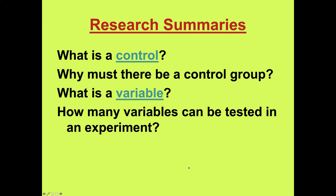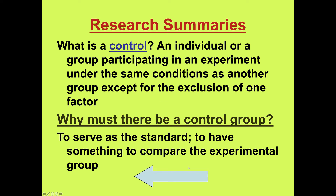The variable is what you are manipulating, and it is recommended that you only have one variable per experiment. The control is an individual or group participating in the experiment under the same conditions as the other group, except that the variable being manipulated is not changed. The control serves as the standard outcome to expect if you hadn't changed the experimental variable, allowing direct comparison with the experimental group.